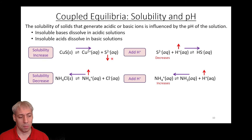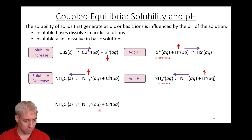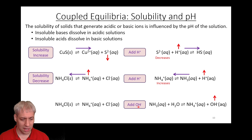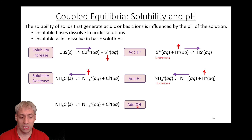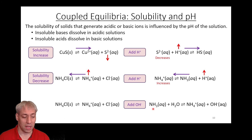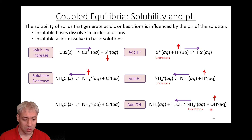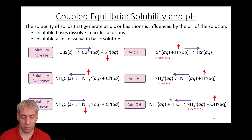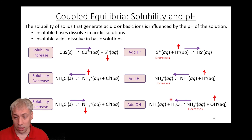So NH4⁺ is an acidic species — adding acid makes it less soluble. The F⁻ was a basic species — adding acid made it more soluble. One more example: the same NH4Cl equation, but now we add OH⁻, increasing pH and decreasing H⁺. We have a basic equilibrium where NH3 + H2O gives NH4⁺ + OH⁻. Add OH⁻, shift it left, decrease NH4⁺. If NH4⁺ decreases, the dissolution equilibrium shifts to the right — NH4Cl becomes more soluble. Adding acid or base makes a solution more or less soluble depending on the species involved.